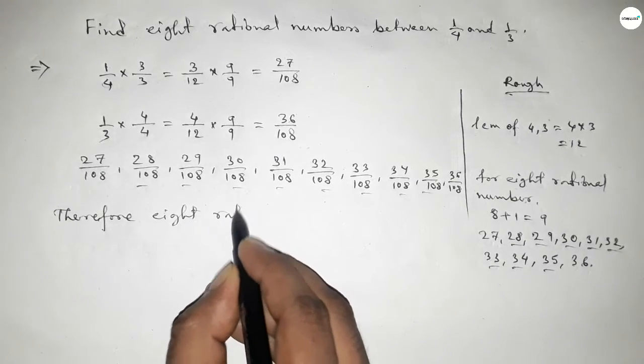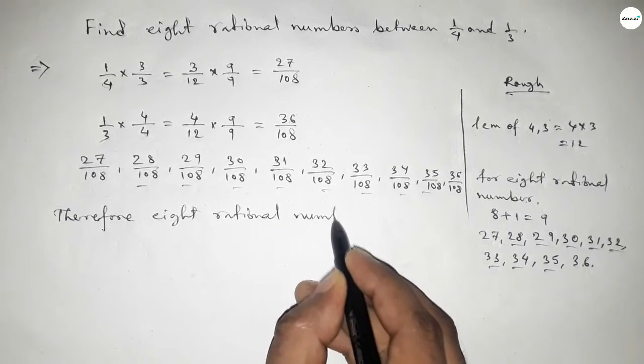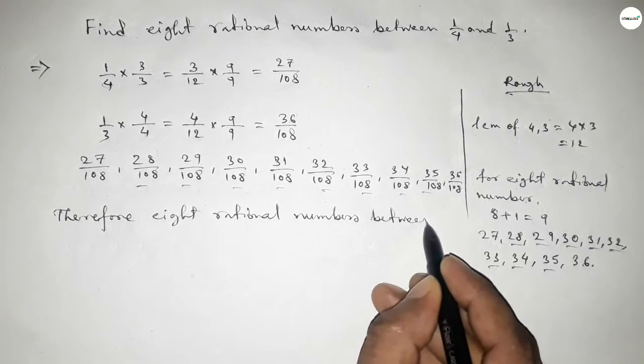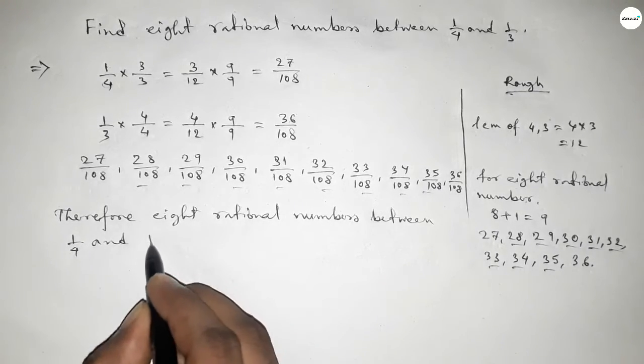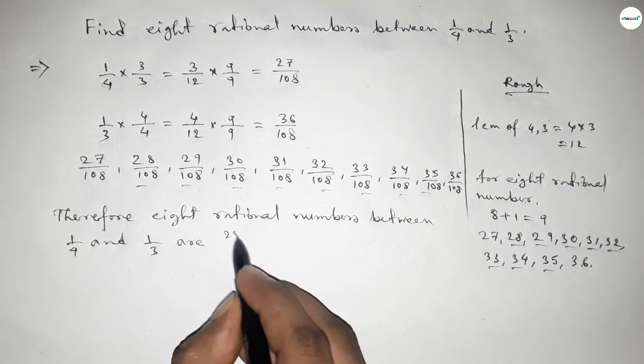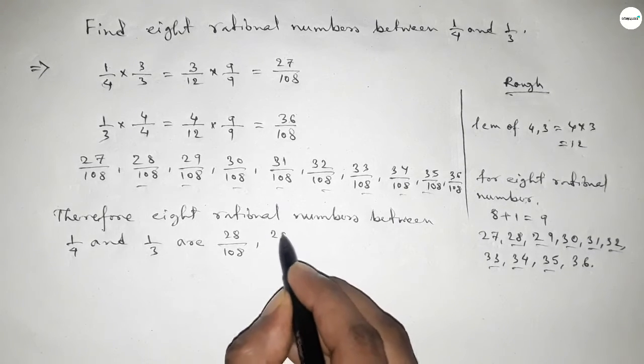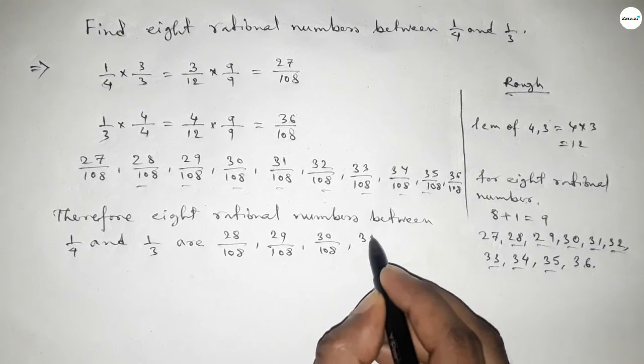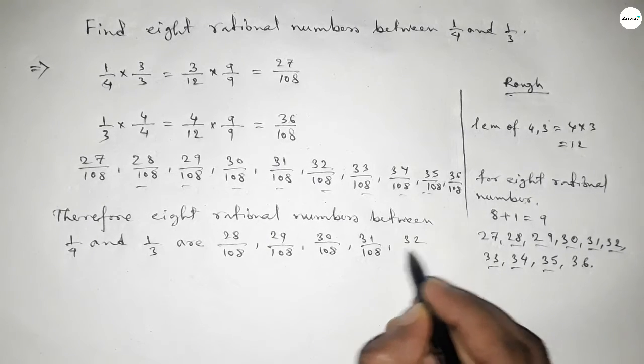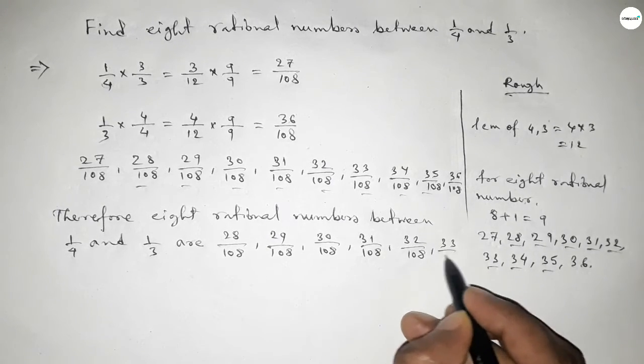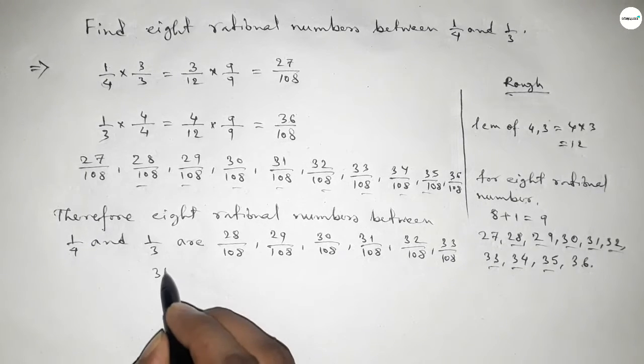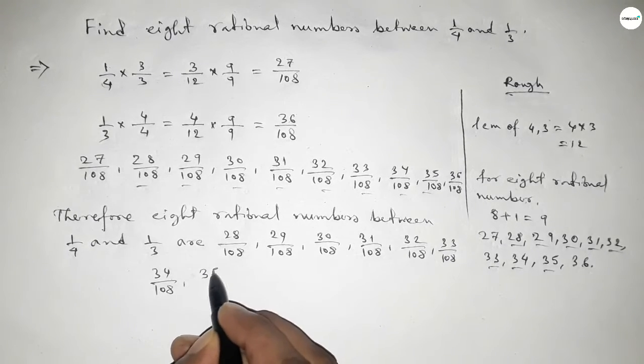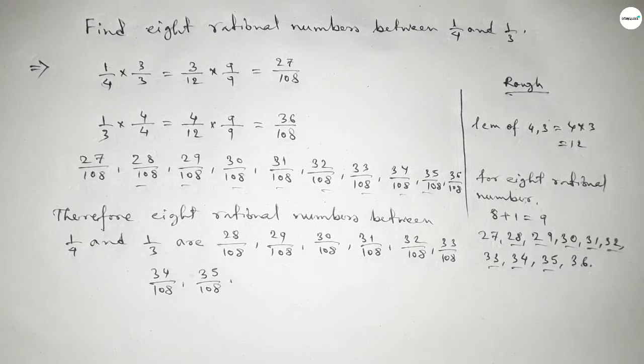Therefore, 8 rational numbers between 1/4 and 1/3 are 28/108, 29/108, 30/108, 31/108 up to 35/108. This is the process to find out 8 rational numbers between 1/4 and 1/3.